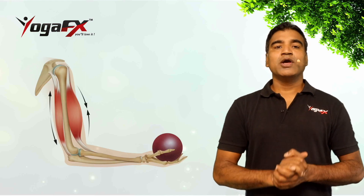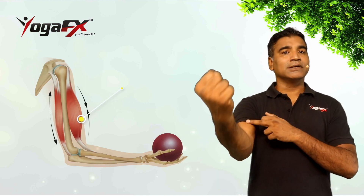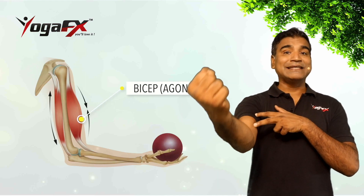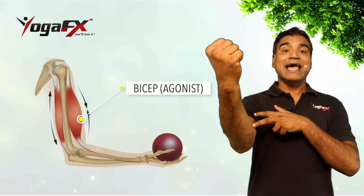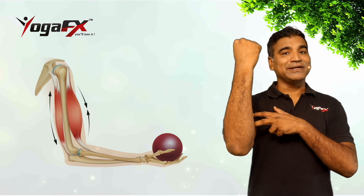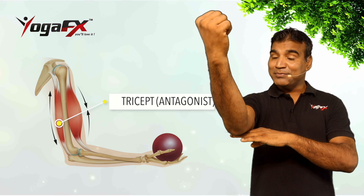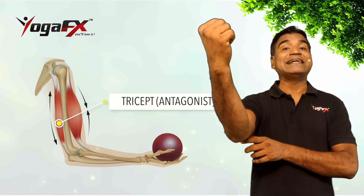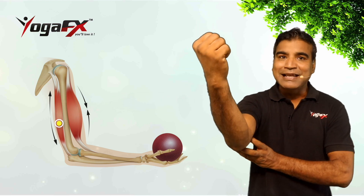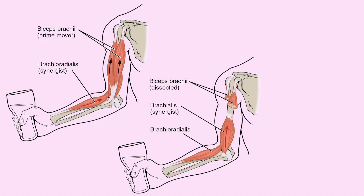For example, when you perform a bicep curl, the bicep will be the agonist as it is contracting to produce the movement, while the tricep will be the antagonist as it is relaxing to allow the movement to occur.